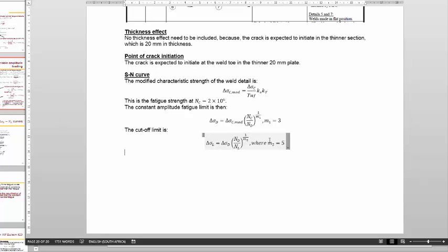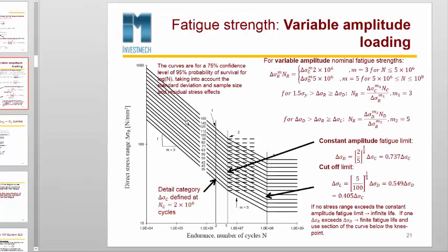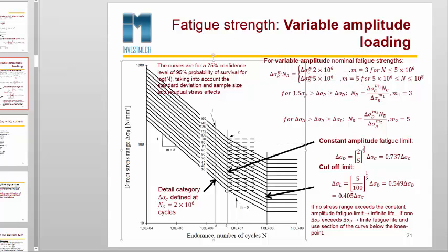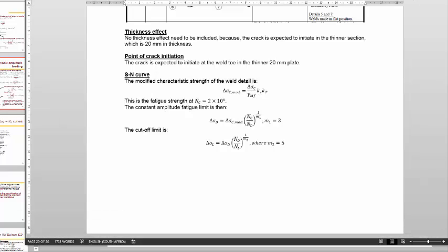Now we have the important points on the SN curve needed to perform calculations. We need to compile an equation that gives the endurance for any stress range — from 1.5 times sigma y down to the constant amplitude fatigue limit, then from the constant amplitude fatigue limit to the cutoff limit, and then beyond. So we will have three regimes.